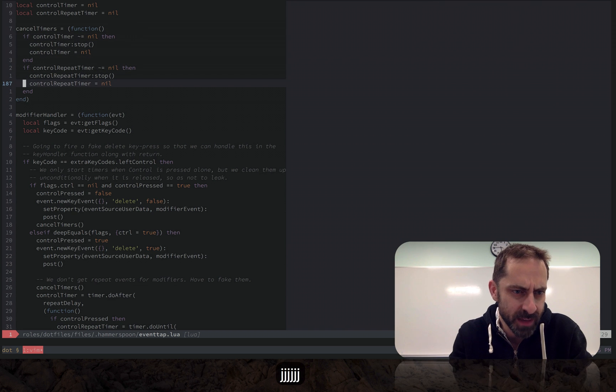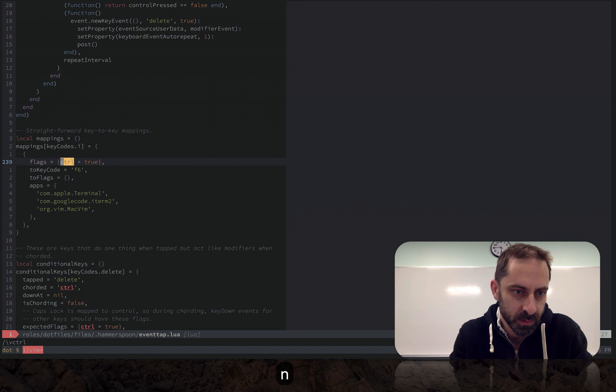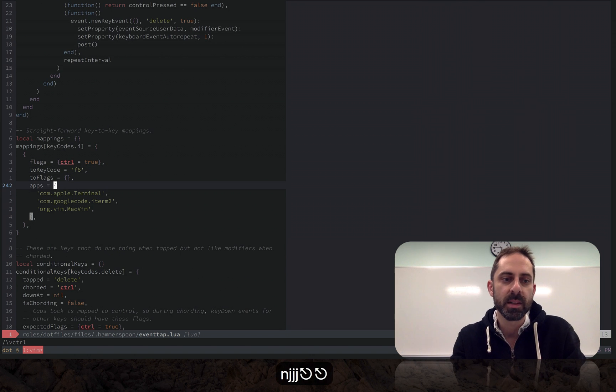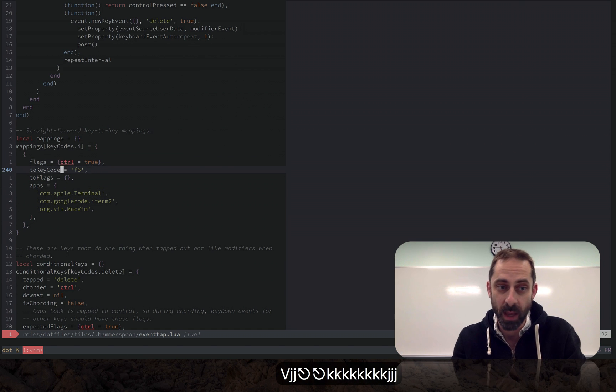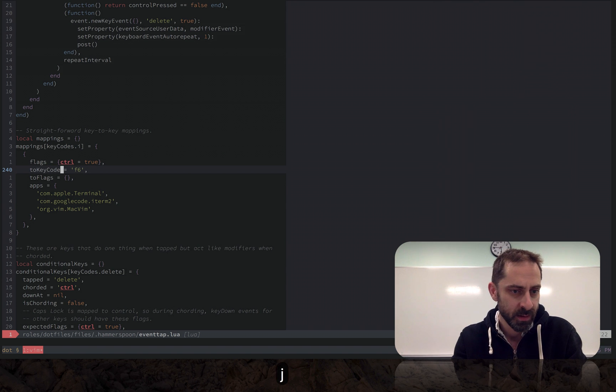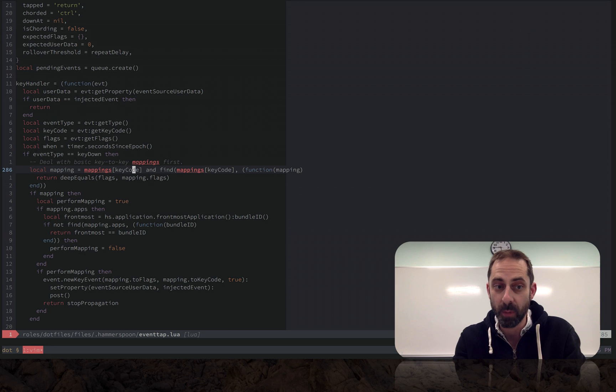Let's have a look at how that is implemented in here. Basically, I've come up with a configuration here that in apps with these bundle identifiers, it is going to take the I key and whenever the control key is down, it's going to turn it into F6.